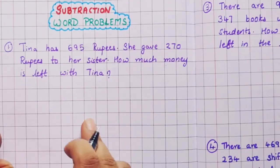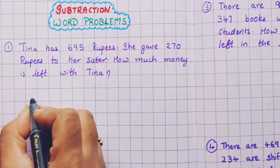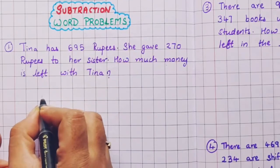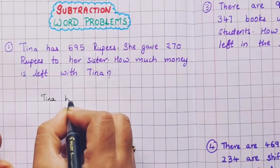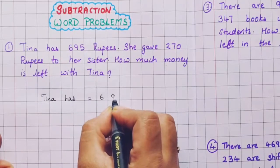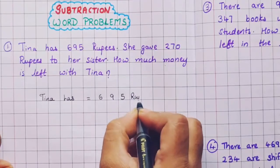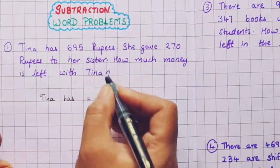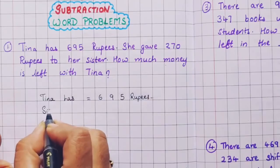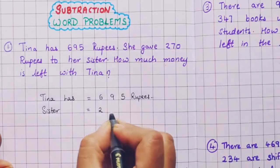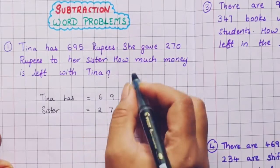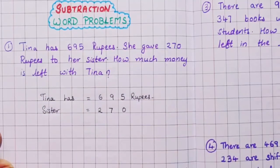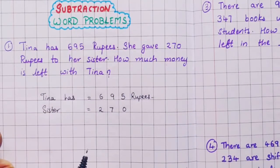So what we are going to do? First we are going to write the statements. Tina has 695 rupees. She gave 270 rupees to her sister. Now how much money is left with Tina? 'Left with' means how much is remaining with her. So we are going to do subtraction here.